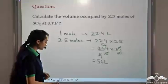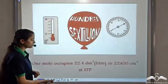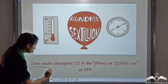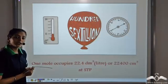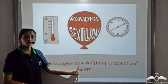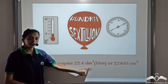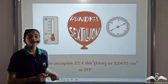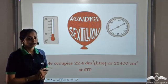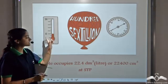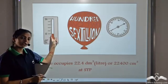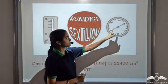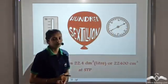So always remember: 1 mole of any gas occupies 22.4 decimetre cube, or 22.4 litres, at STP — that is, the standard temperature of 0 degree Celsius and standard pressure of 1 atmosphere.